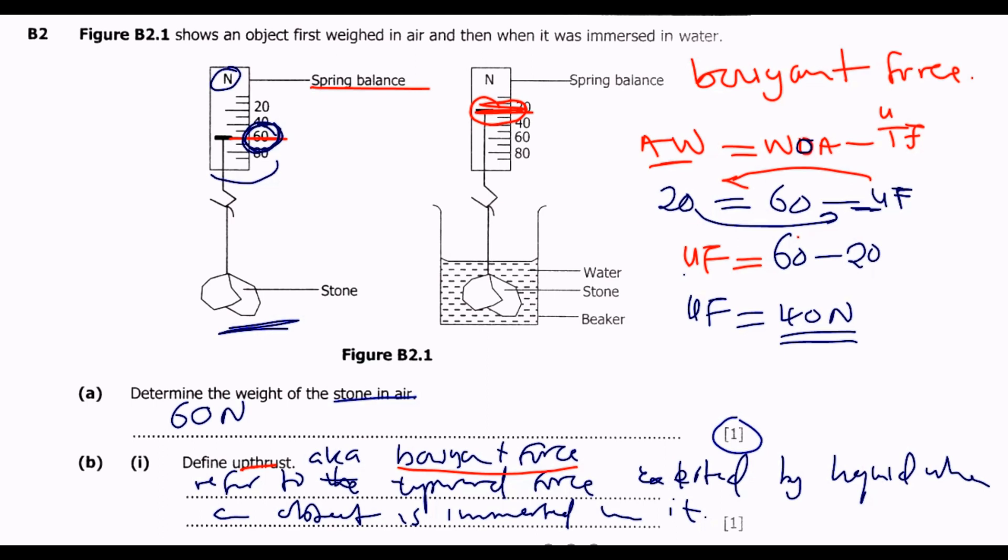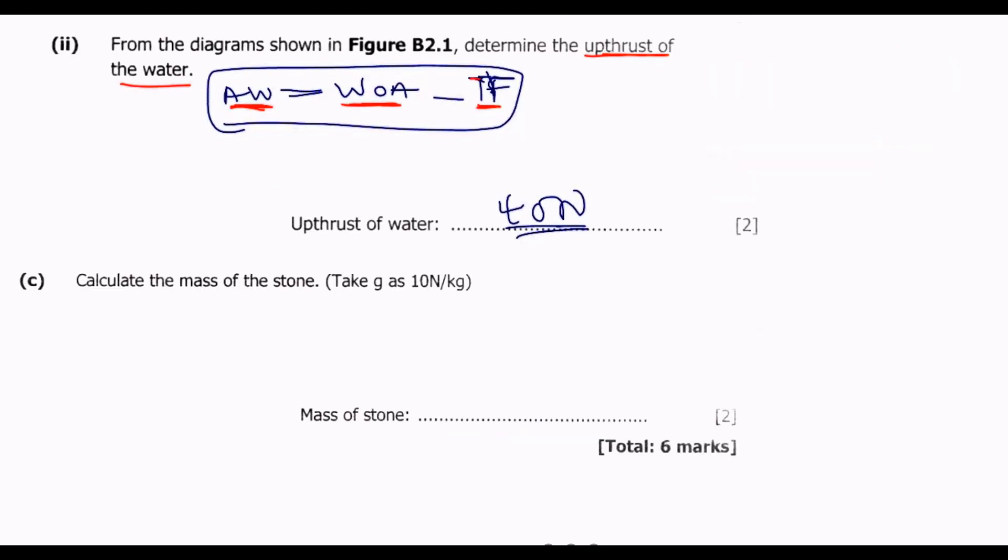That's the reading on the scale in the air, because the upthrust is distorted by the pressure and the upward pressure by the water. So that'll be the weight. We have weight equals mass times gravity, then we are looking for mass, so we make mass the subject of formula.